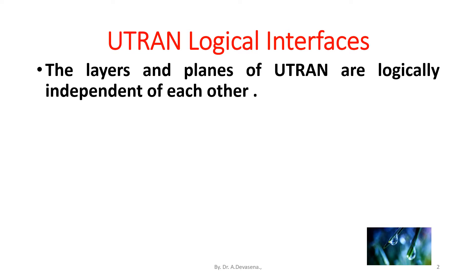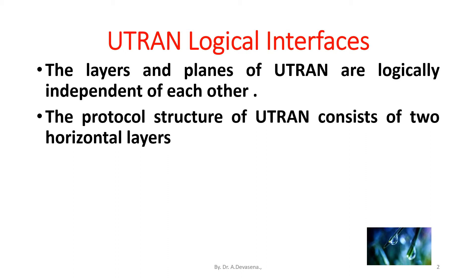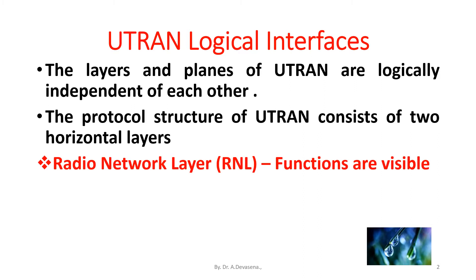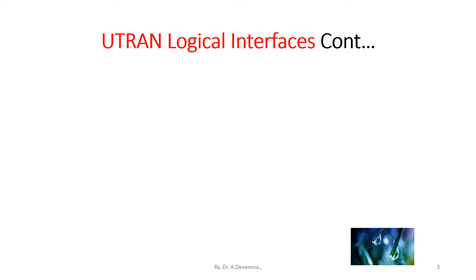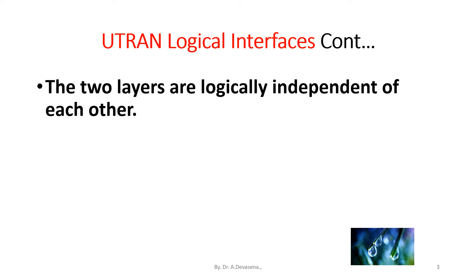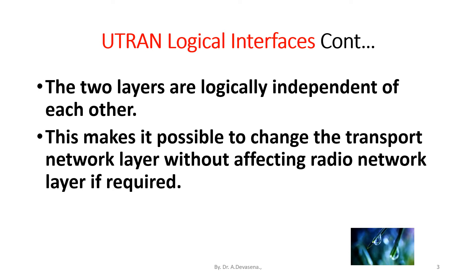The layers and planes of U-tron are logically independent of each other. The protocol structure of U-tron consists of two horizontal layers. They are: radio network layer, R and L, and transport network layer, T and L. This transport network layer deals with transport technology. These two layers are logically independent of each other.